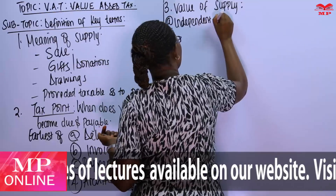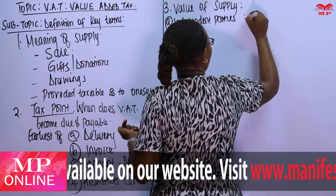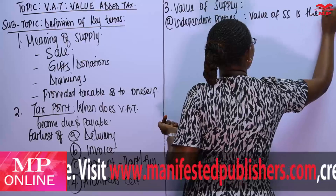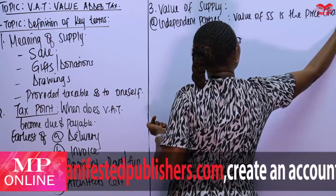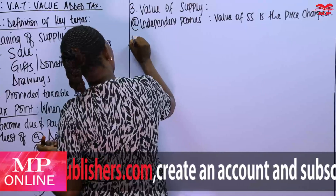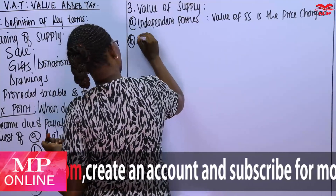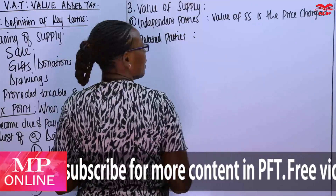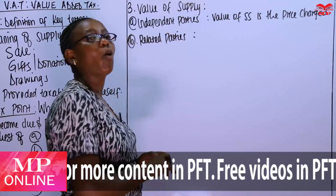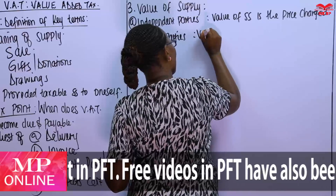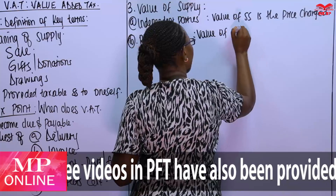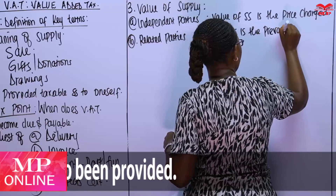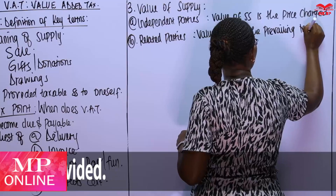We apply the same principle here. If the parties in a transaction are independent of each other — independent parties — the value of supply is the price charged. If the parties are related — related parties — we apply the prevailing market price as the value of supply, since the actual price charged between related parties may be lower than the market price.